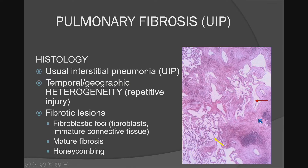I briefly mentioned the histology because it's useful to make a distinction with other things. In UIP-IPF, the histology is heterogeneous. If you look over here, you have normal alveoli, but then over here they're thickened. It's that heterogeneity that allows the pathologist to make the diagnosis. The interstitium is very thickened in some areas and relatively normal in others, and you have other findings they look for, like fibroblastic foci.